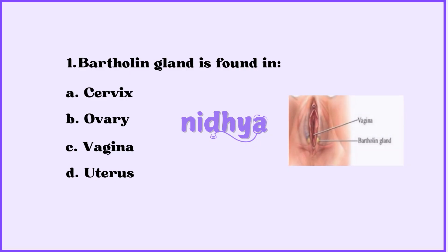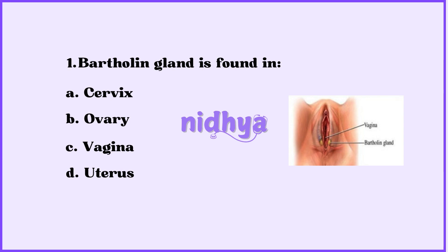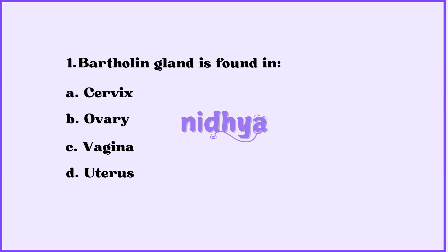First question: Bartholin's gland is found in — cervix, ovary, vagina, or uterus? The answer is vagina.